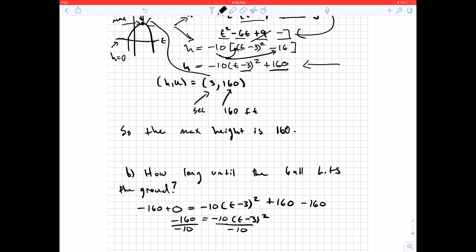So we get that 16 is going to equal, because it cancels here, t minus 3 squared. Now, what I can do from this point on is take the square root of both sides.